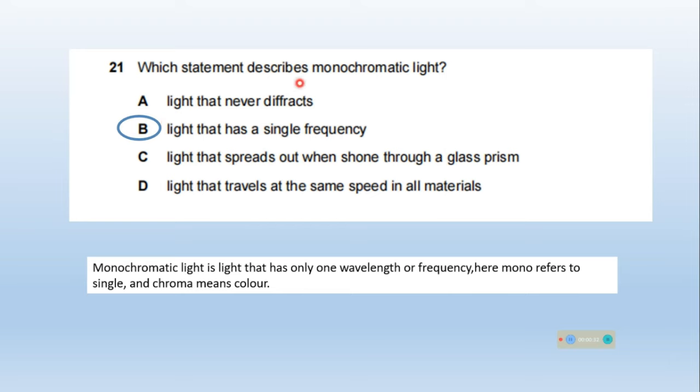Which statement describes monochromatic light? Option B, light that has a single frequency. Monochromatic light is light that has only one wavelength or single frequency. Mono refers to single and chrome means color. Option B is right.